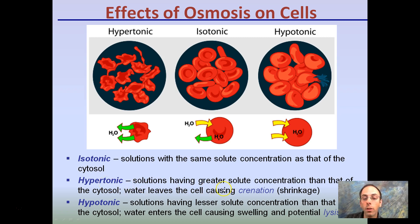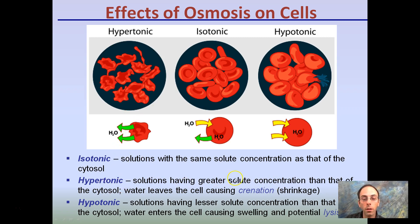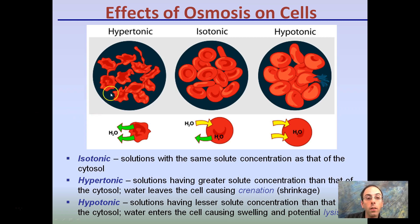Hypertonic refers to solutions having greater solute concentrations than that of the cytosol, where water leaves the cell causing shrinkage to occur. The solution has greater solute concentration than that of the cytosol, so water leaves the cell causing it to shrink. This is basically causing a shriveled appearance to occur.